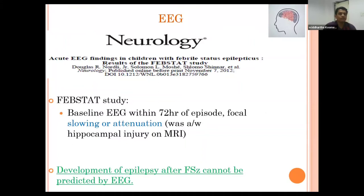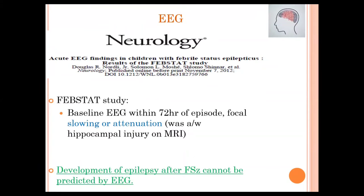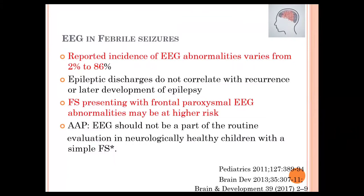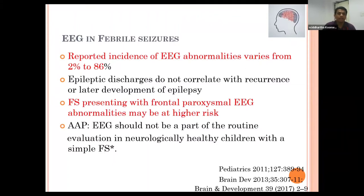Regarding EEG: a study from 2012 showed baseline EEG within 72 hours of episode may reveal focal slowing and attenuation, but EEG cannot predict future development of epilepsy. The reported incidence of EEG abnormality varies widely from 2 to 86 percent. Epileptic discharges do not correlate with recurrence or later development of epilepsy. Per the American Academy of Pediatrics, EEG should not be part of routine evaluation in neurologically healthy children with simple febrile seizure. EEG can be ordered in complex febrile seizure or in children with neurological deficits.